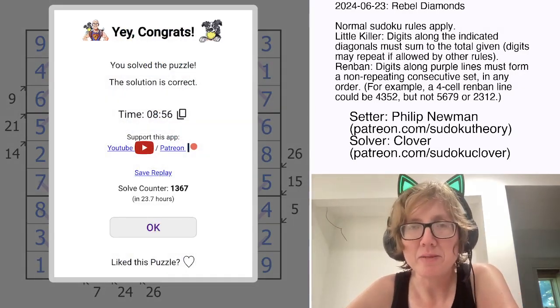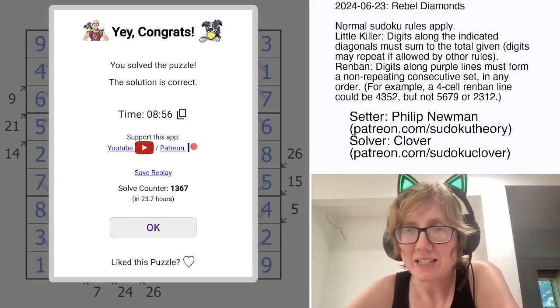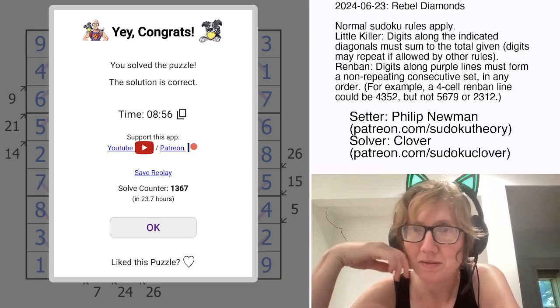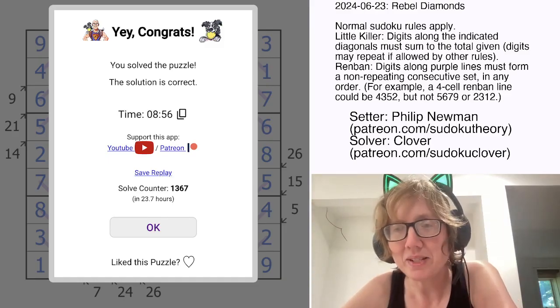And that is how you solve Philip Newman's Rebel Diamonds. Hope you enjoyed that. And if you'd like to give it a try yourself, the link to solve is in the description of this video down below. I will see you next time.